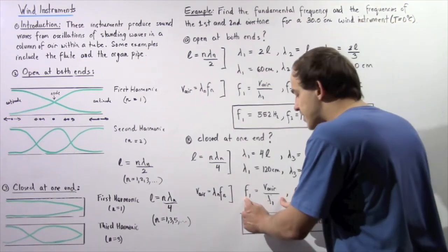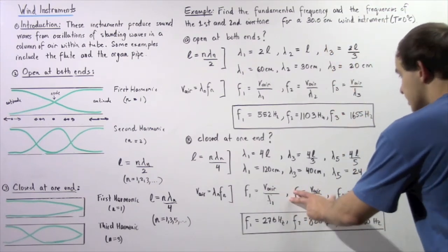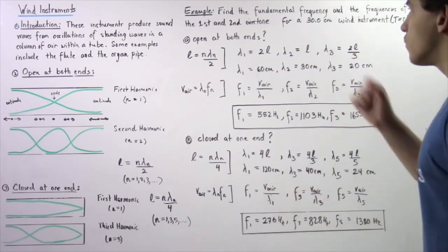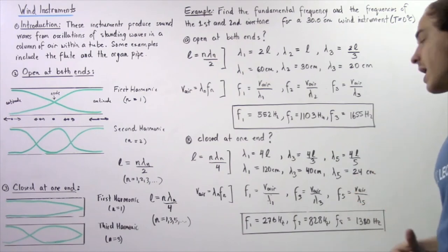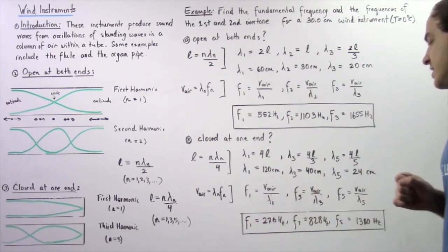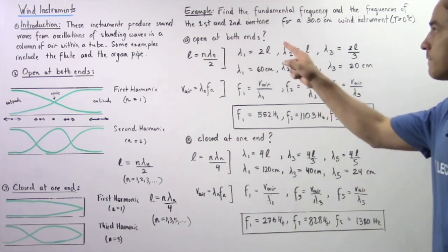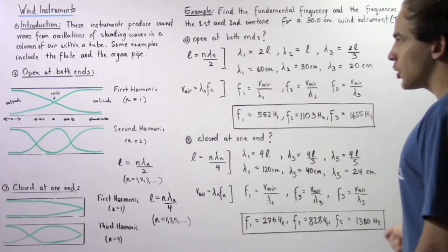Using the velocity equation to calculate each frequency: the fundamental frequency F1 is 276 Hz, the frequency of the first overtone is 828 Hz, and the frequency of the second overtone (fifth harmonic) is 1380 Hz.